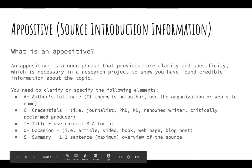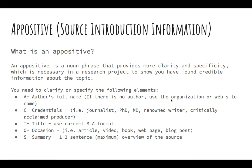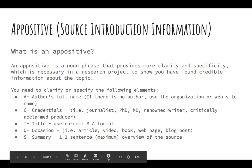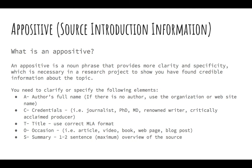You need to clarify or specify the following elements: the author's last name — if no author, then use the organization or website name. The credentials: what do we know about this person? The title, using correct MLA format — so the title should be in quotation marks, unless you're referring to an entire website. The occasion: is it an article, a video, a webpage, a blog post? And then a one to two sentence maximum summary, just an overview of the source, to show your audience the basic information about it.